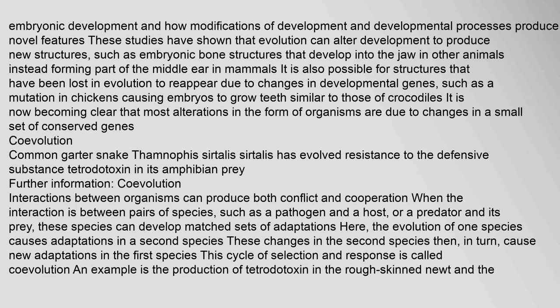An area of current investigation in evolutionary developmental biology is the developmental basis of adaptations and exaptations. This research addresses the origin and evolution of embryonic development and how modifications of developmental processes produce novel features. Studies have shown that evolution can alter development to produce new structures — such as embryonic bone structures that develop into the jaw in other animals forming part of the middle ear in mammals. It is also possible for structures lost in evolution to reappear due to changes in developmental genes, such as a mutation in chickens causing embryos to grow teeth similar to those of crocodiles.